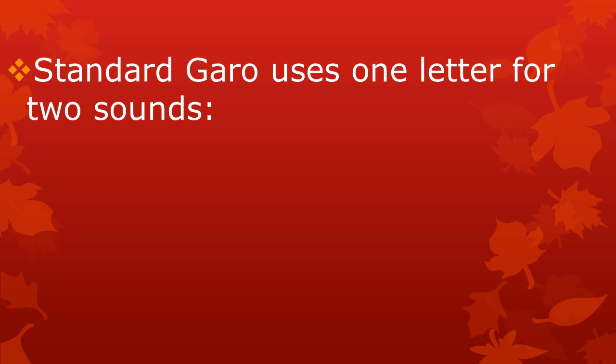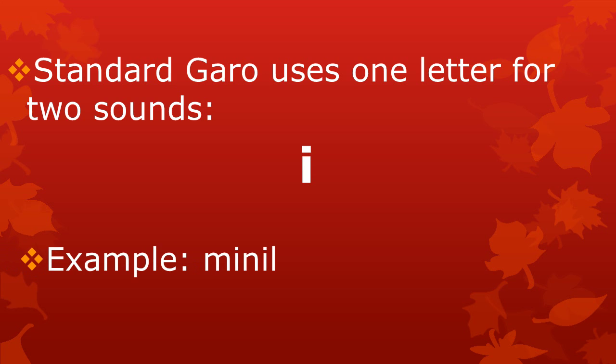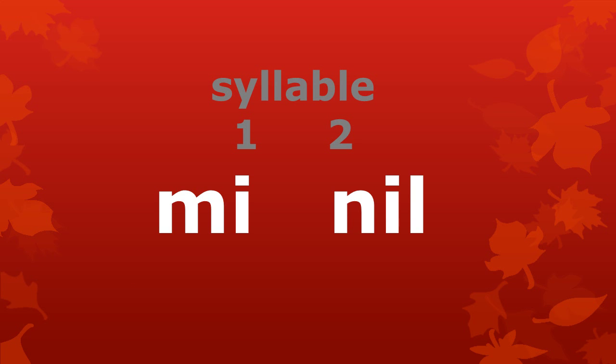Many Atong speakers can write standard Garo, and in standard Garo spelling the letter Ö is not used. In Garo spelling, the sounds E and Ö are both written with the same letter, which we call E in English or E in Atong. For example, the word Minel is written the same way in standard Garo, even though the sound in the first syllable is different from the sound in the second syllable.